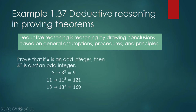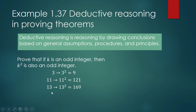Here is the challenge: prove that if k is an odd integer, then k squared is also an odd integer. Let's check it out — 3 is odd, and 3 squared which is 9 is also odd. 11 is odd, 11 squared is 121, also odd. 13 is odd, 13 squared is 169, also odd.